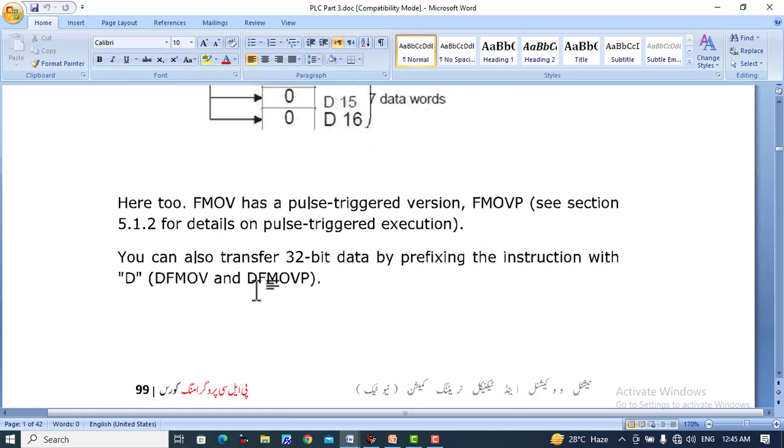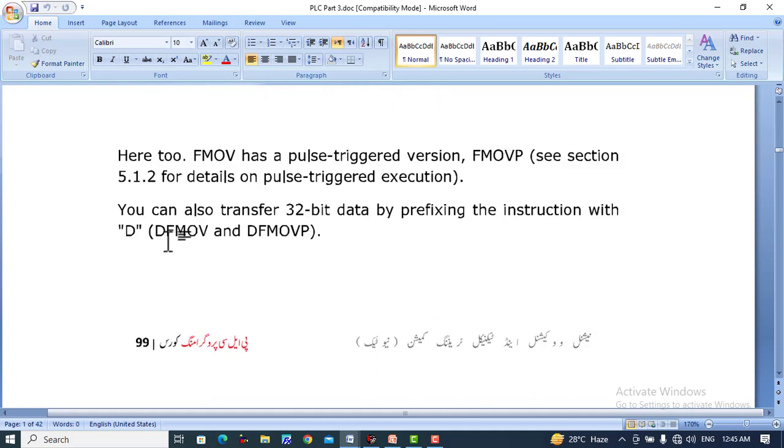When we transfer 32 bit data in this instruction we need to use double word instruction DFMOV, and it can also be used with the rising edge DFMOVP, so it will work on the rising edge of the input pulse.